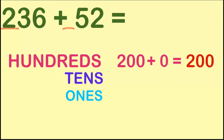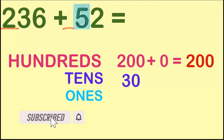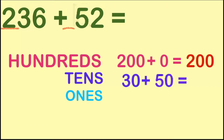Let's proceed at the tens place. At the tens place, on the first number, we have digit 3, and its value is 30. Then on the second number, we have digit 5, and its value is 50. Let's add 30 and 50. 30 plus 50 is equal to 80.